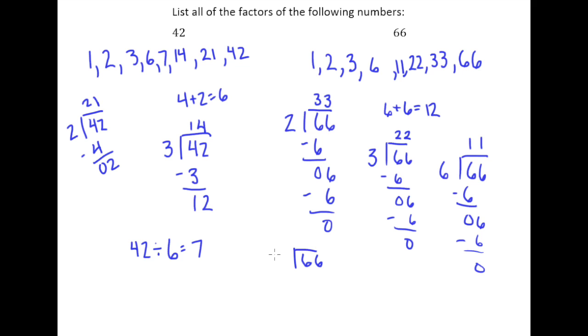So with 7, you just kind of got to try it. Let's see. 7 would go into 66 nine times because 7 times 9 is 63. We have a remainder, so 7 doesn't work.